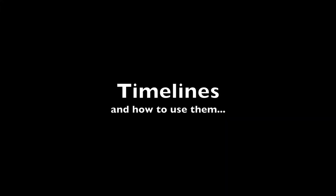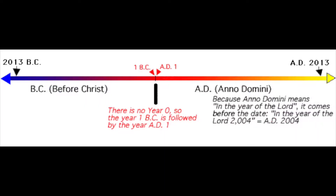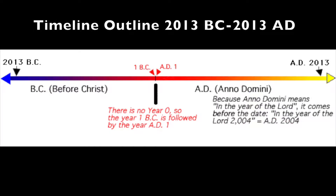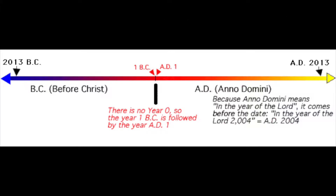Now let's go over how to read a timeline. Here is a basic outline of what an average timeline looks like. First, there is no year 0 — year 1 BC is followed directly by year 1 AD. This timeline uses BC and AD (Anno Domini, meaning 'in the year of our Lord'). Non-religious alternatives are BCE and CE, which mean the same thing — so 2013 BCE is the same as 2013 BC. Another important feature every timeline should have is a title, which tells you what the timeline covers and what years it spans.